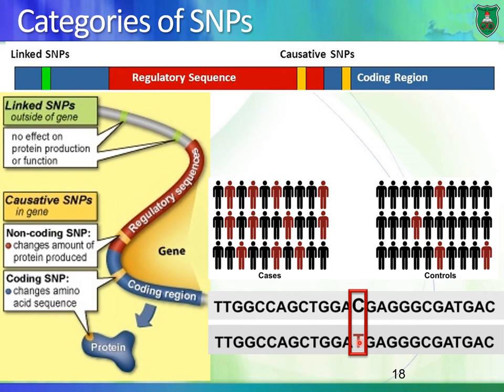If you know someone has a T, you would say there is a probability they might develop a certain disease — it does not mean they would definitely develop it. So what does it mean that a SNP is linked? It may be located near a gene that causes that disease, so when the gene is inherited, the SNP is also inherited along with it — that's what linked means.